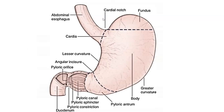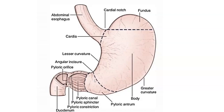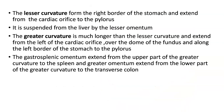Anatomical landmarks visible on the stomach diagram include: the fundus, cardiac notch, pyloric antrum, greater curvature, body, pyloric canal, pyloric sphincter, pyloric constriction, duodenum, pyloric orifice, incisura angularis, and lesser curvature. The lesser curvature forms the right border of the stomach, extending from the cardiac orifice to the pylorus, and is suspended from the liver by the lesser omentum. The greater curvature is longer, extending from the left of the cardiac orifice over the dome of the fundus to the pylorus; the gastro-splenic omentum extends from its upper part to the spleen, and the greater omentum from its lower part to the transverse colon.